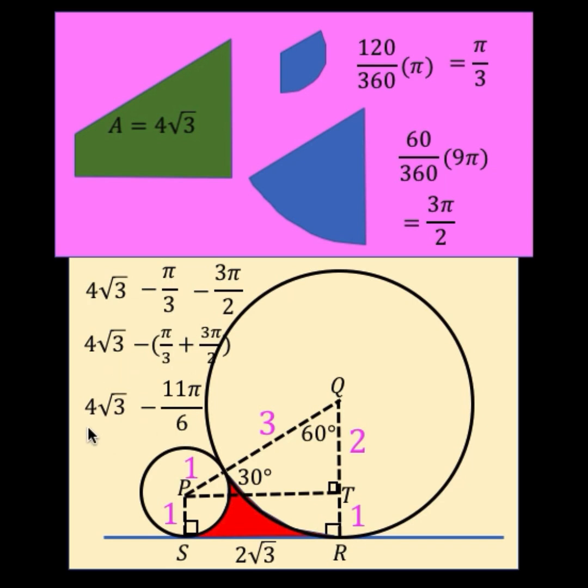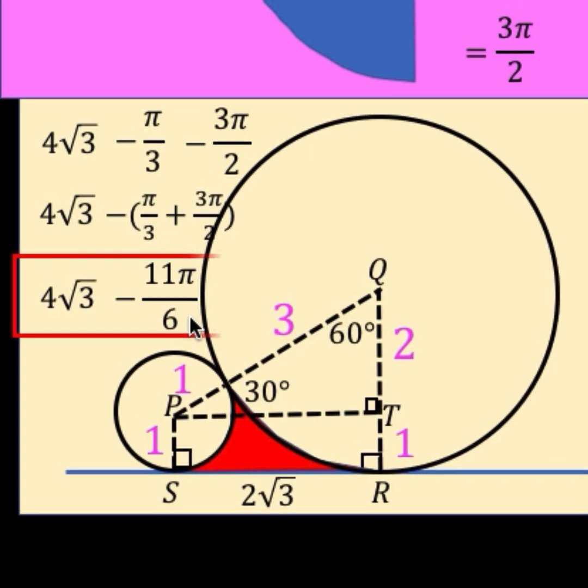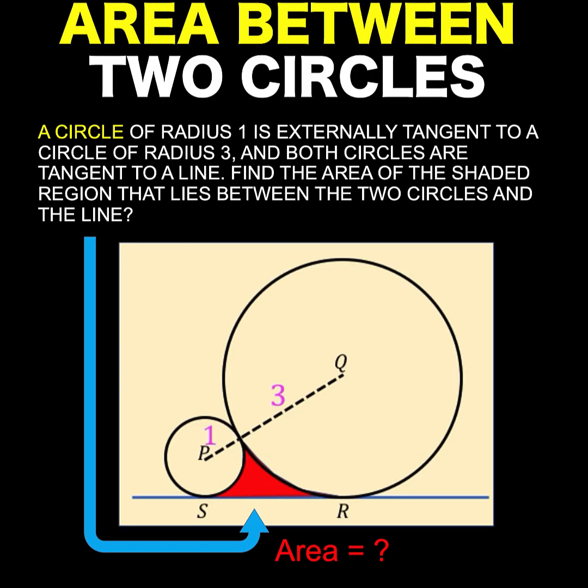So finally, our answer is 4 square root of 3 minus 11 pi over 6 for the area of this shaded region. And that is now our final answer.